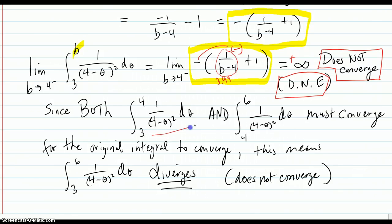And since both 3 to 4 and 4 to 6 must converge for the original integral to converge, this means that the original integral diverges or does not converge.